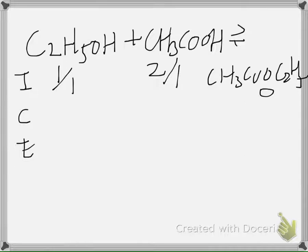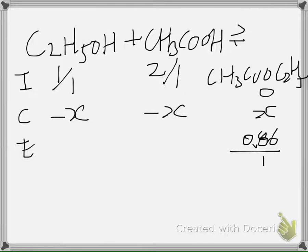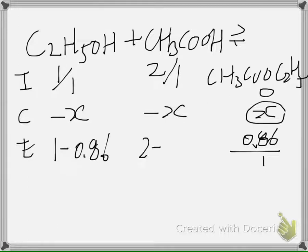The change on the product side increases by X moles, and on the reactant side it decreases — it's a 1:1:1 molar ratio. At chemical equilibrium, they say 0.86 moles of ester was formed, so the ester concentration is 0.86 M (0.86 moles / 1 liter). This means X = 0.86. Applying X: ethanol becomes 1 − 0.86 and acetic acid becomes 2 − 0.86.